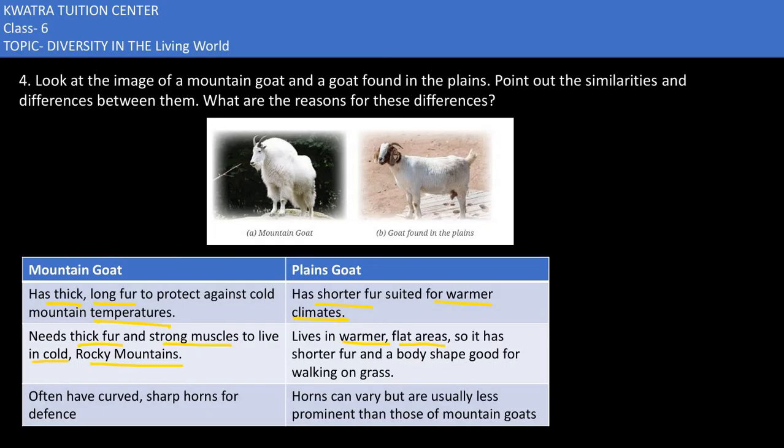Mountain goats have curved and sharp horns for defense, whereas the horns may vary for plains goats and are not as sharp. So that's what you can write for the similarities and differences between these two goats — the mountain goat and the goat found in the plains.